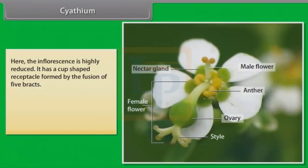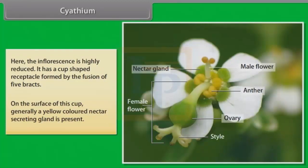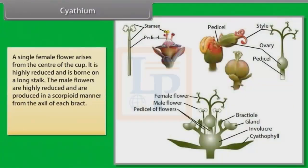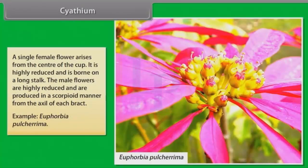In Cyathium, the inflorescence is highly reduced. It has a cup-shaped receptacle formed by the fusion of five bracts. On the surface of this cup, generally a yellow colored nectar-secreting gland is present. A single female flower arises from the center of the cup; it is highly reduced and is born on a long stalk. The male flowers are highly reduced and are produced in scorpioid manner from the axil of each bract. Example: Euphorbia pulcherrima.